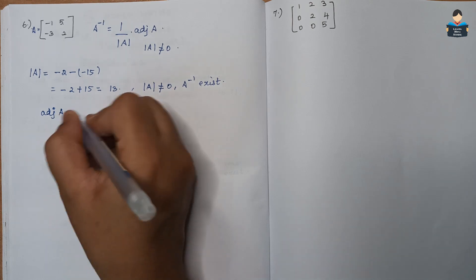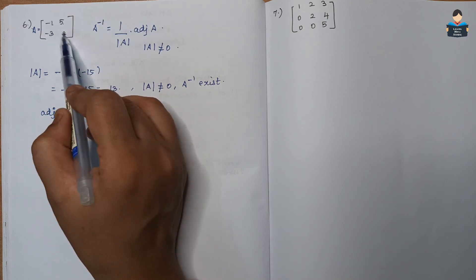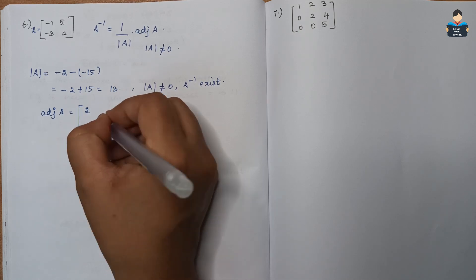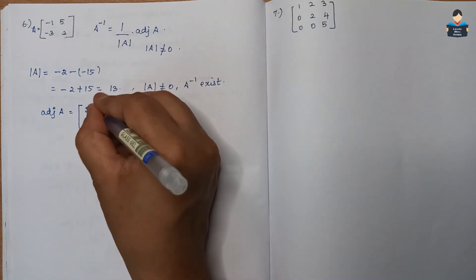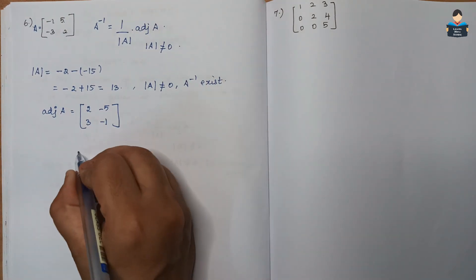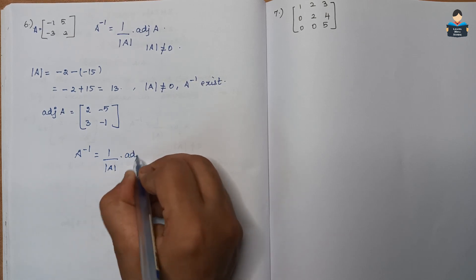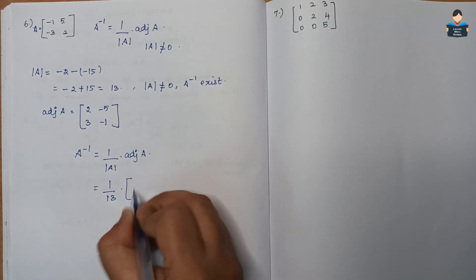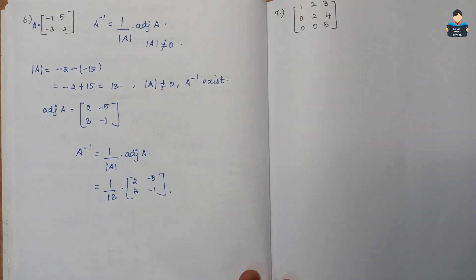Now find the adjoint of A. For a 2 by 2 matrix, interchange the diagonal elements and change the signs of the off-diagonal elements. The adjoint gives minus 5, 3. So A inverse equals 1 by 13 into the matrix [[2, -5], [3, -1]]. This is the answer for question 6.